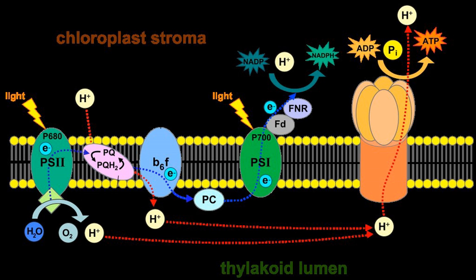When a chlorophyll a molecule within the reaction center of PSII absorbs a photon, an electron in this molecule attains a higher energy level. Because this state of an electron is very unstable, the electron is transferred from one to another molecule creating a chain of redox reactions called an electron transport chain. The electron flow goes from PSII to cytochrome B6F to PSI. In PSI, the electron gets the energy from another photon.